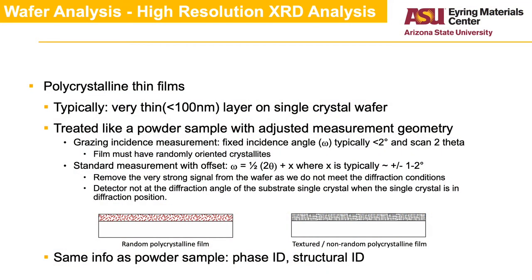Typical polycrystalline thin films are in the 100 nm range, and sometimes thinner. The thinner the sample, the more challenging the measurement becomes. Typically, we would do a grazing incidence measurement, meaning that the X-ray beam is at a very shallow incidence angle and fixed for the duration of the measurement. For such a measurement to be useful, the sample must have randomly oriented crystallites.